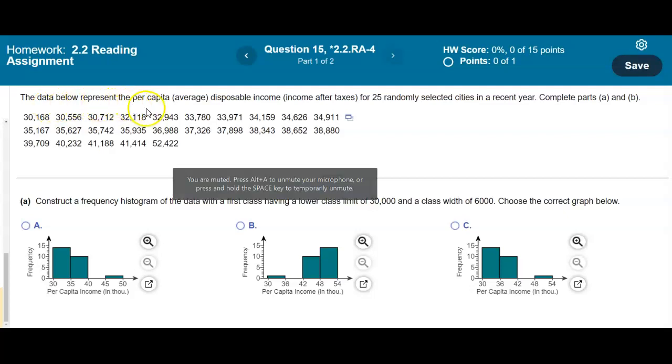The data below represent the per capita average disposable income, income after taxes for 25 randomly selected cities in a recent year. Complete parts A and B. Now, first take a look at the data. If you notice, the data is all in the 30,000s.